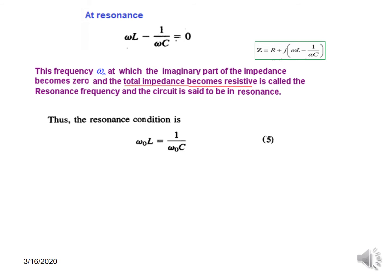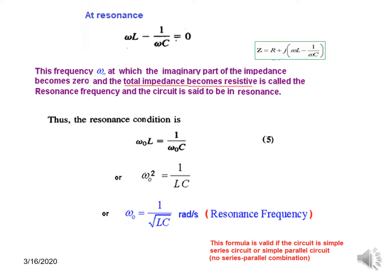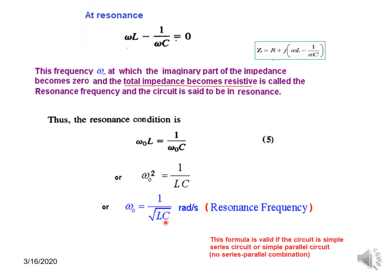From the resonance condition, we can write ω₀L = 1/ω₀C. Rearranging, ω₀² = 1/LC, so ω₀ = 1/√(LC) radians per second. This is the resonance frequency. A word of caution: this formula is valid only for a simple series circuit or a simple parallel circuit — it is not valid for a series-parallel combination.